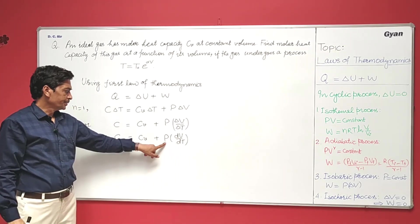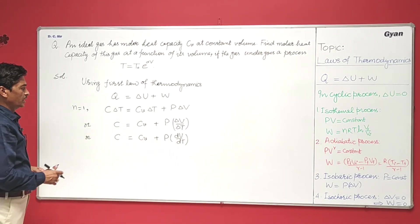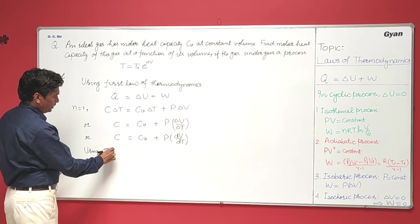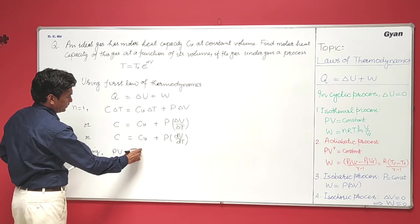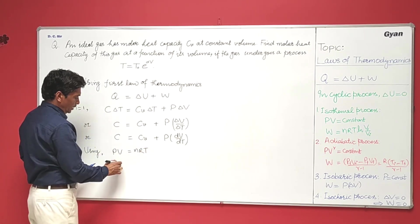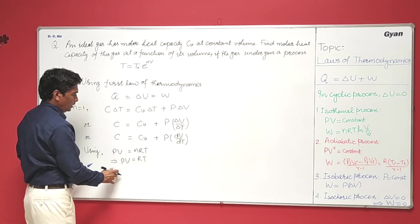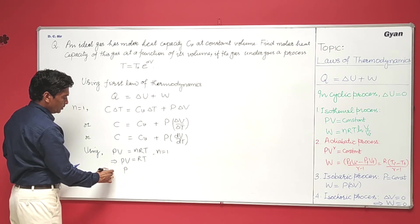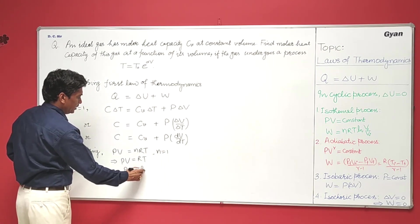Now first change this P by using PV equals nRT. Using n equals 1, we have P equals RT over V.